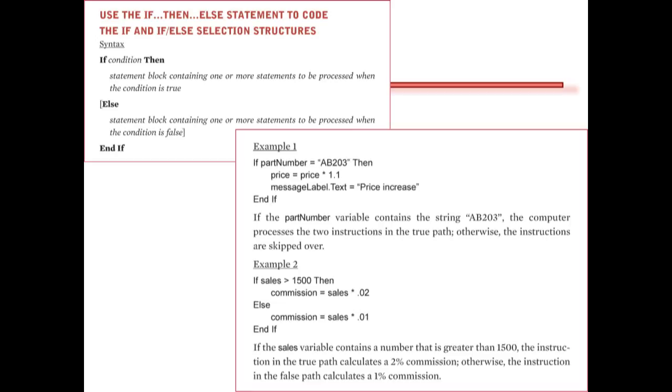When you write the code, you first write if, then your condition, then write then, and in the next line, write your set of instructions. Similarly, if you actually have an else, write a new line with else, go to the next line, and write a set of instructions.